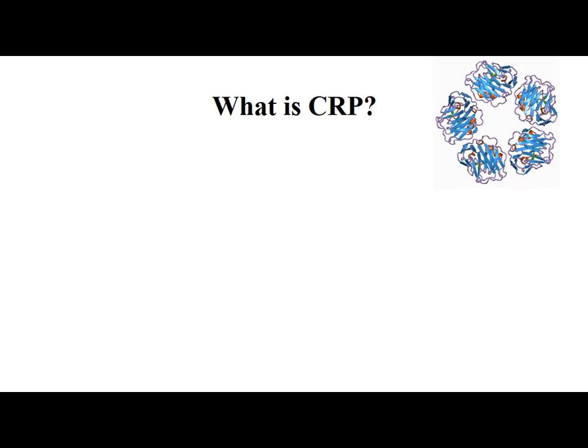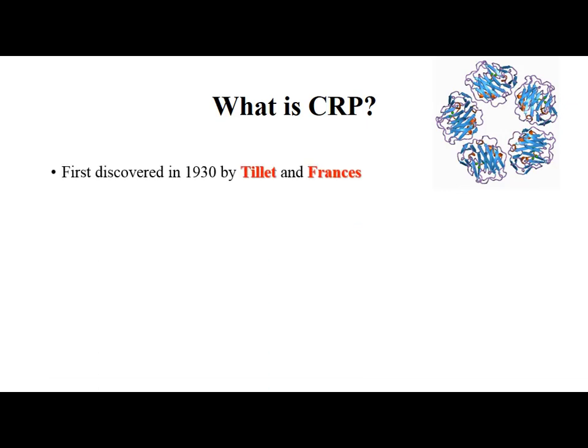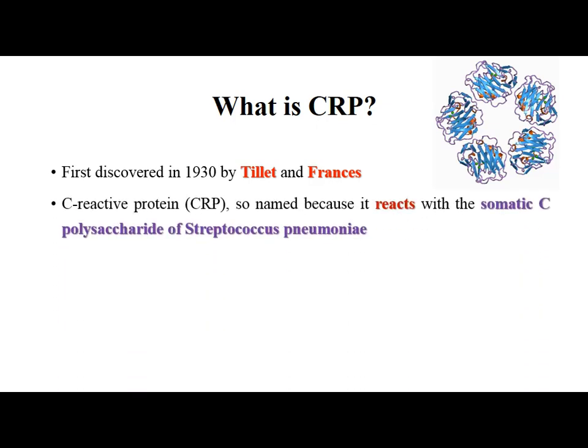CRP was first discovered in 1930 by Tillett and Francis. They found that the serum of patients with acute inflammation reacted with the somatic carbohydrate antigen of Streptococcus pneumoniae, and hence they named the protein as C-reactive protein.